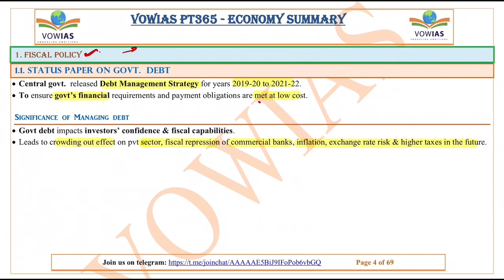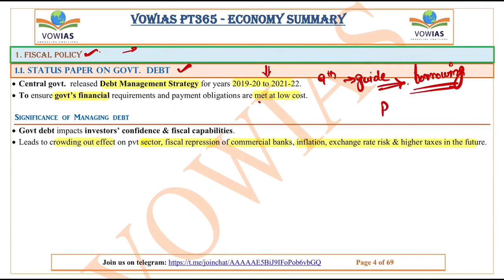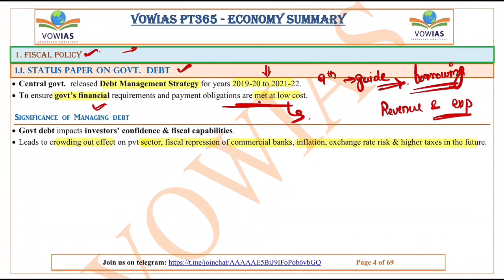The first topic here is the status of government debt. The Central Government released the Debt Management Strategy for 2019–20 to 2020–21. This is the ninth edition and it will guide the borrowing plan of the government, because borrowing is very important for the government to meet the mismatch between revenue it is receiving and expenditure it has to incur. The difference between revenue and expenditure is nothing but the fiscal deficit. This strategy ensures the government's financial requirements and payment obligations are met, with the main target being that all borrowing is done at very low cost.